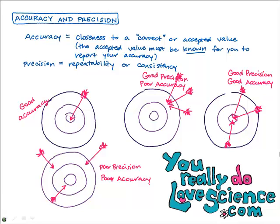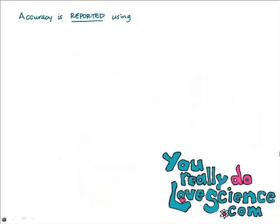Now that you understand the difference between accuracy and precision, how do we actually report it? In your lab report you're not going to be drawing dart boards, so there's a different way to report your accuracy and precision. Accuracy is reported using something called percent error, which is a measurement of how far off you were from the accepted value, expressed as a percentage.